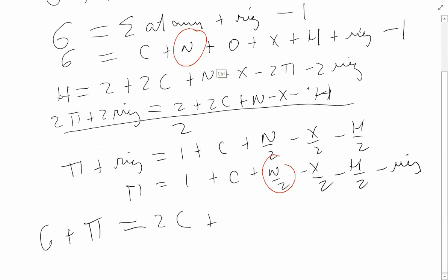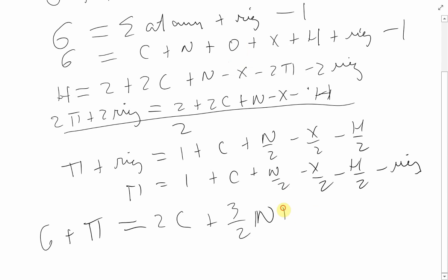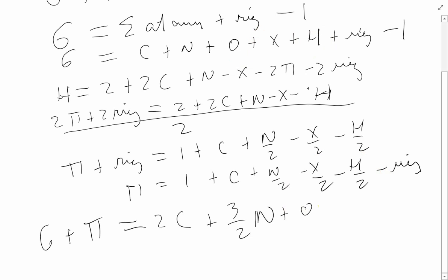Combining the remaining terms: carbon gives 2C. Adding nitrogen contributions gives 3/2 N. Oxygen has no term in the pi equation, so it just remains as oxygen. For halogens and hydrogens, which are both monovalent, combining gives 1 − ½ = ½ each. So halogen and hydrogen each appear with a coefficient of one-half.